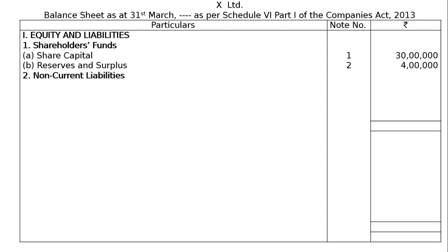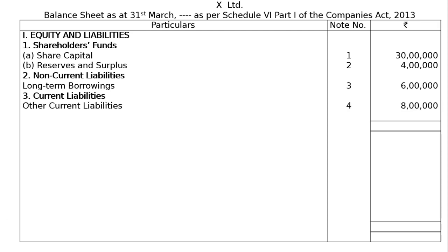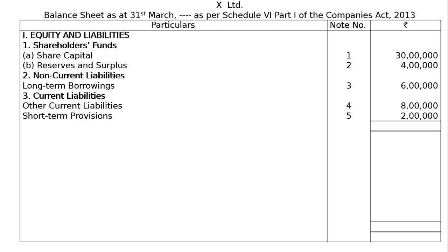Then non-current liabilities. Under non-current liabilities, long-term borrowings, note number 3: 6,00,000. Then current liabilities: other current liabilities, note number 4: 8,00,000. Then short-term provision — provision for tax, note number 5: 2,00,000. The total of the liability side comes to 50,00,000.